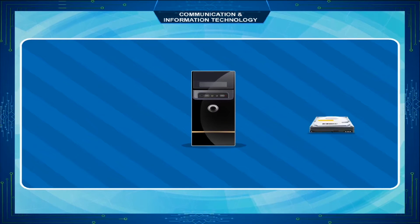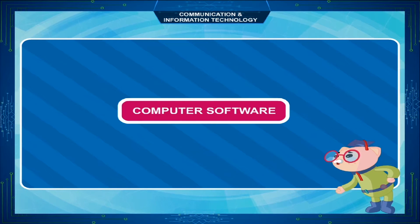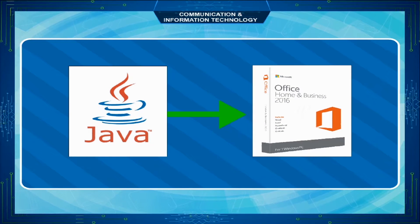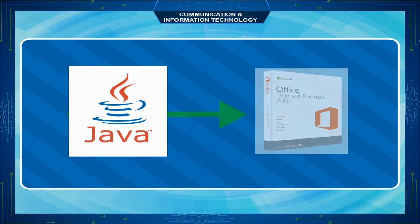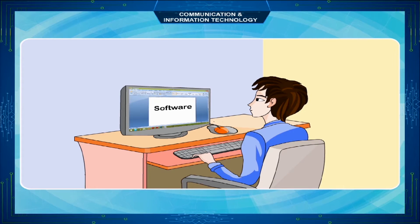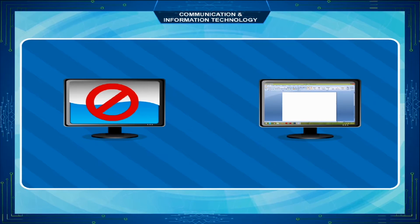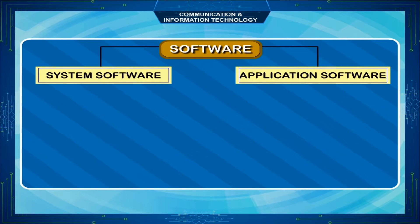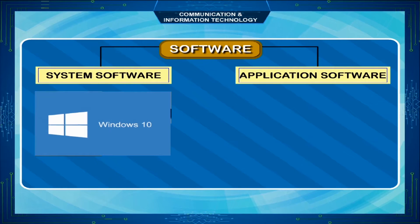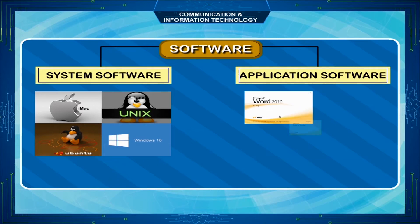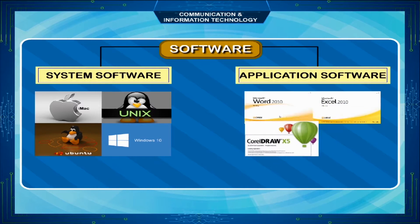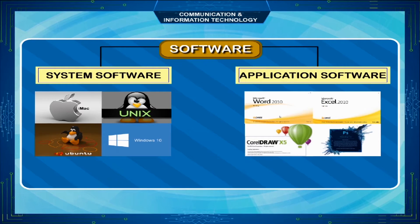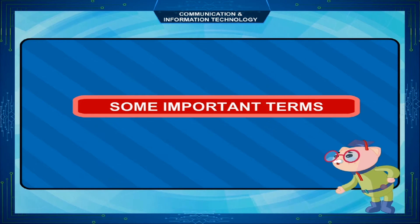All the hardware devices are attached to the processing device which is known as the CPU or Central Processing Unit. Computer Software: a set of programs that carries out a specific task is called software. The programs are written in a computer language. Computer needs software to do any work. Without software, a computer is like a television without film. Software is classified into two categories: System Software — Unix, Ubuntu, Windows — and Application Software — MS Word, MS Excel, CorelDRAW, Photoshop.